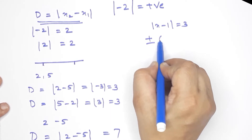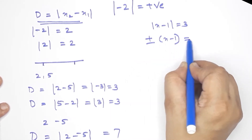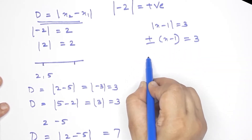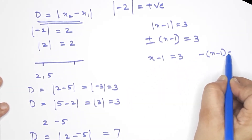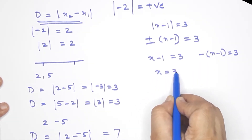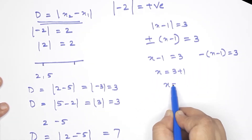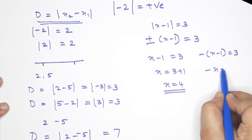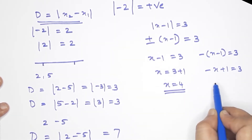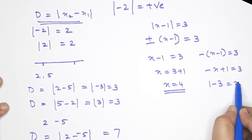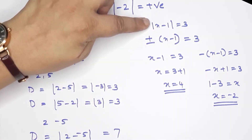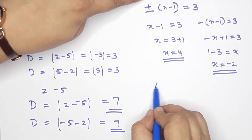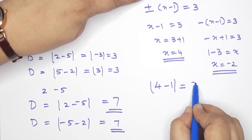Now I don't have a problem with modulus — it gives plus or minus. So x minus 1 equals 3, giving x equals 4. And minus of x minus 1 equals 3, which means minus x plus 1 equals 3, so 1 minus 3 equals negative x, giving x equals negative 2. There are two values. Check: modulus of 4 minus 1 equals modulus of 3 equals 3. Correct.